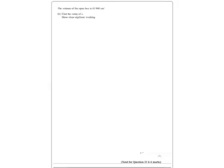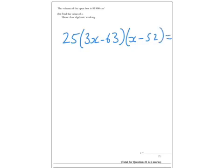Now, to find the volume, you've essentially got the volume of a cuboid. So, what you're doing here is 25, which is the height of the cuboid, times the length, which is 3x minus 63, which we found in the previous part, multiplied by the width, which is x minus 52, equals 81900. OK, because we're told that the volume is that, and then we're going to multiply it out.